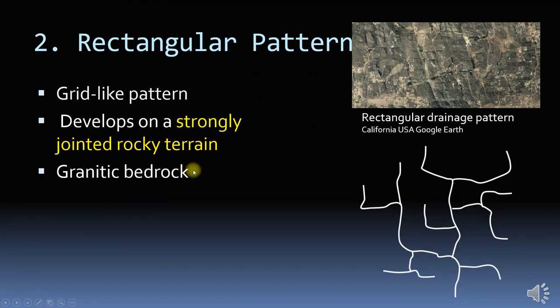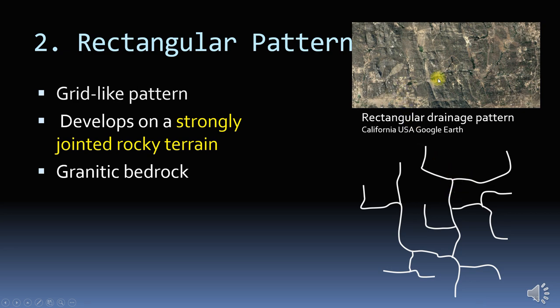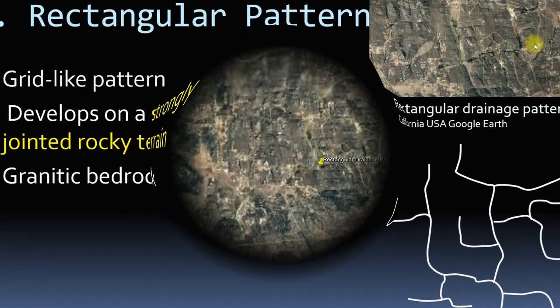The second pattern is the rectangular pattern. In this, tributaries join the river at right angles. You can see a grid-like pattern which develops in a strongly jointed rocky terrain.